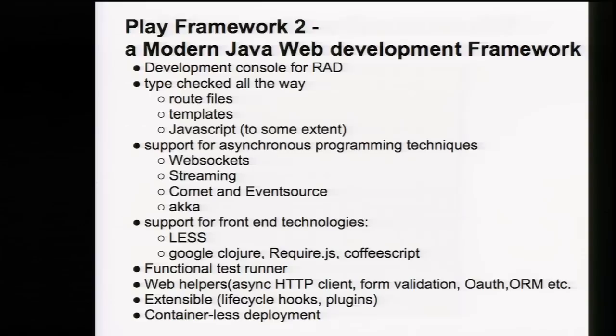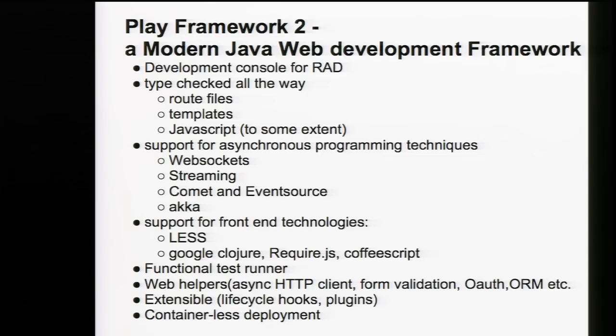It turns out many things have changed since 2009. First, many new front-end technologies have emerged — I'm talking about LESS, CSS transformers, CoffeeScript, Google Closure Compiler, or HTML5. Second, many web applications on the JVM moved from mostly synchronized design with polling-based strategies to more asynchronous, non-blocking, push-based ones. That's why Play 2 supports Comet, WebSocket, event source, and data streaming in general out of the box.